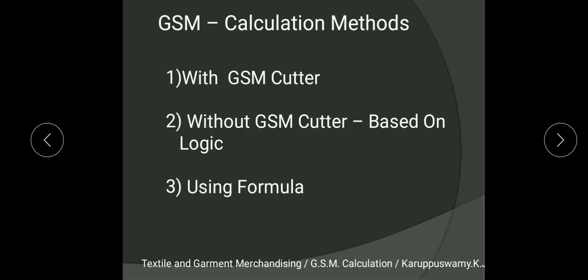Generally in industry we do not take a full 1 meter length of fabric because it leads to huge material loss. So we use other methods to save fabric wastage. To calculate GSM there are three methods available: using a GSM cutter, without a GSM cutter using mathematical logic, and using a formula. Let us discuss each one in detail.